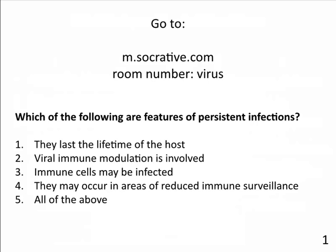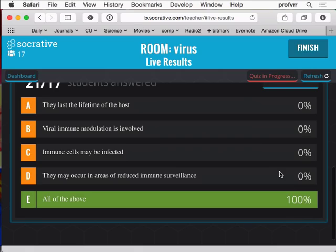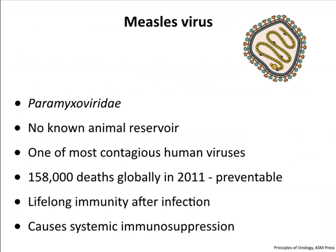Quiz question: which of the following are features of persistent infections? Options were: they last the lifetime of the host; viral immune modulation is involved; immune cells may be infected; they may occur in areas of reduced immune surveillance; or all of the above. Everyone answered E — all of the above — which is correct. These are all features of persistent infections.